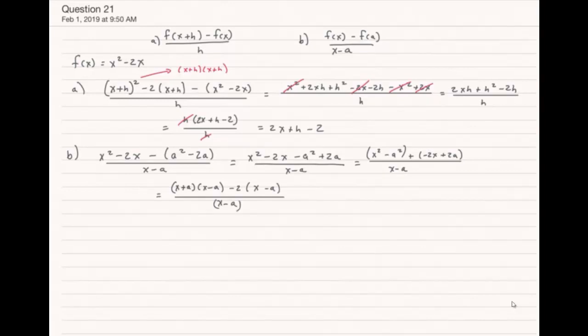So now, just to be careful, I'm going to go ahead and explicitly factor out the (x - a) out of what's in the numerator. You don't have to use parentheses in the denominator, but I think sometimes it makes it more clear what's going on. So this equals x + a - 2, and that's our final answer for part b.